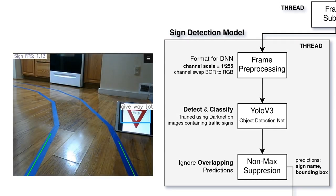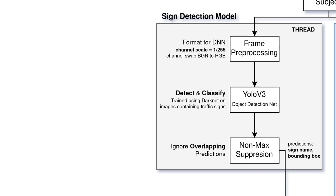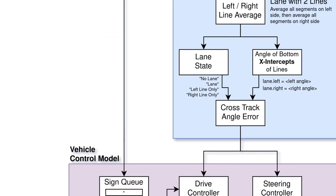On the Raspberry Pi, the YOLO-V3 network operates at around 1 frame per second. The network outputs predictions that include the name of the predicted sign and the bounding box, which provides the location of the sign. We pass this output through a non-max suppression algorithm to potentially reduce the number of overlapping predictions. This is all we need from our sign detection model. The predictions are now sent to the vehicle control model.